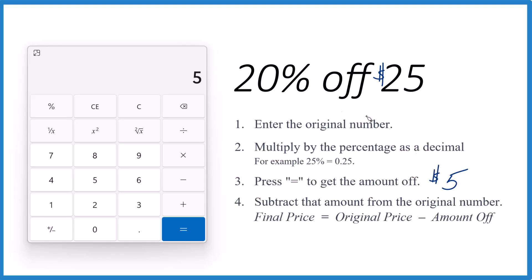To get that final price, 20% off $25, we take the original, that's 25, subtract the amount off, we just calculated that, and we end up with $20.